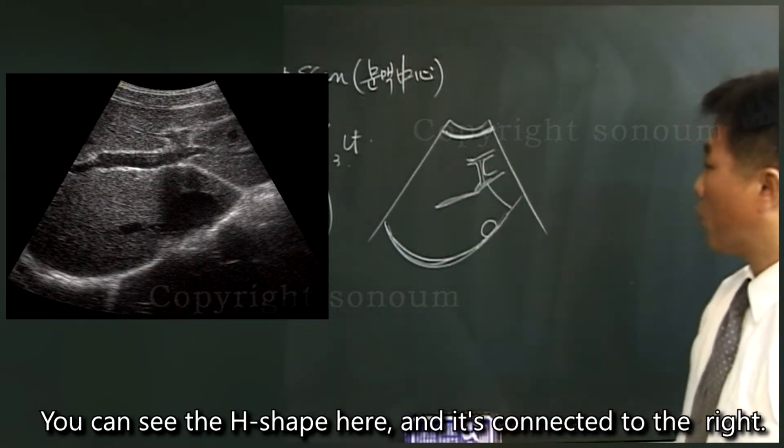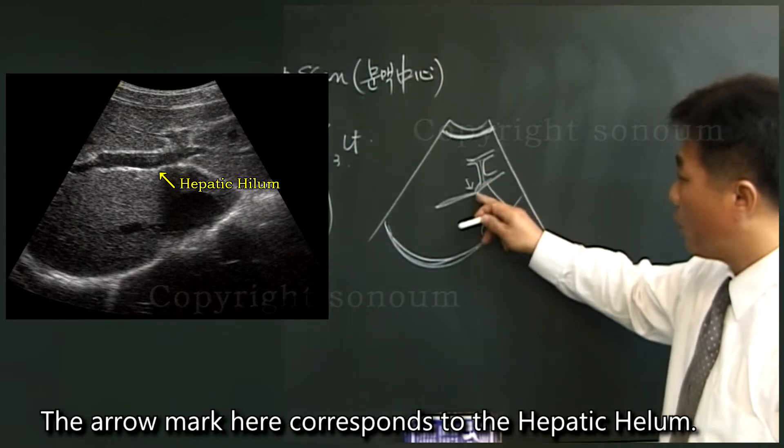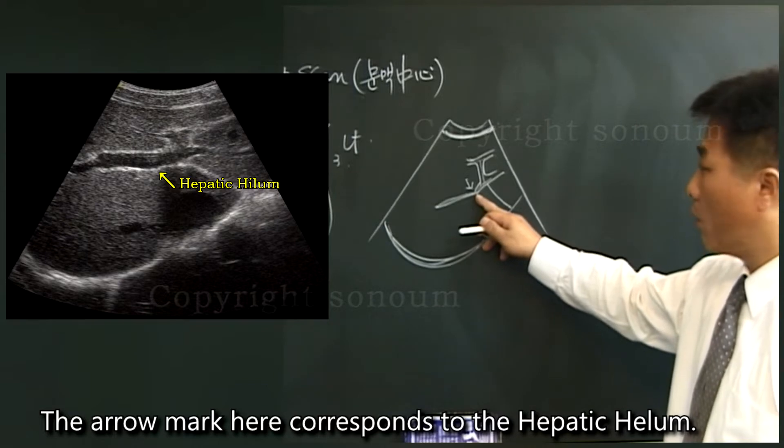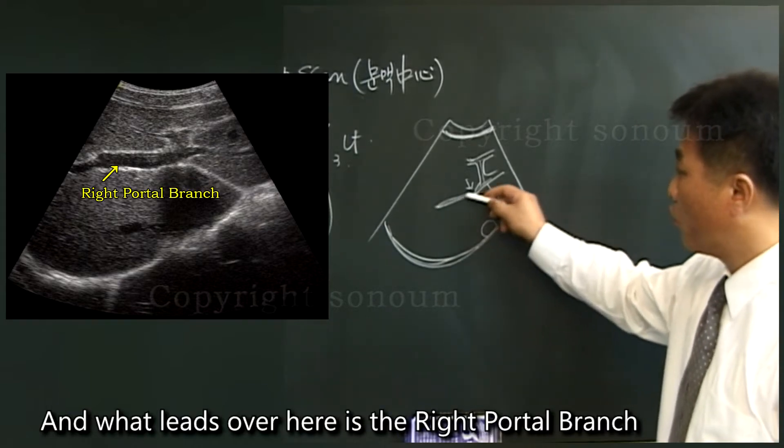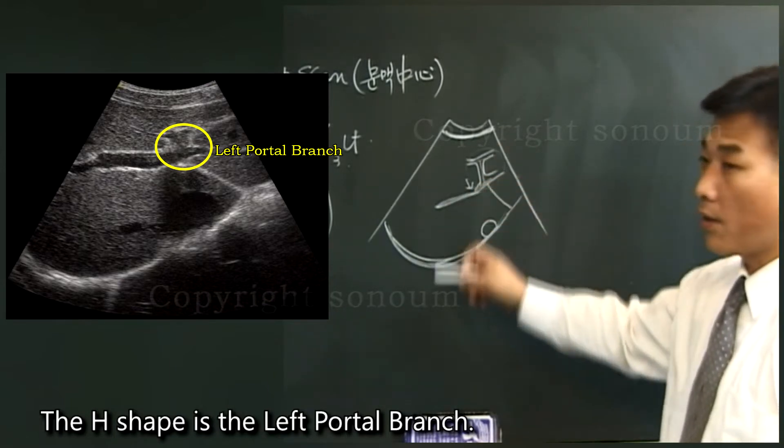You can see the h-shape here. And it's connected to the right. The arrow mark here corresponds to the hepatic hilum. And what leads over here is the right portal branch.